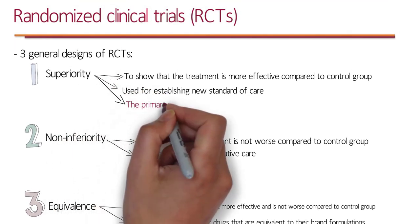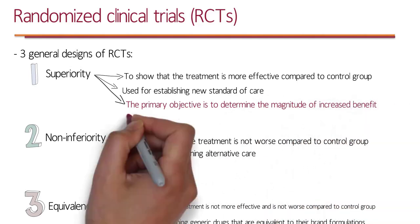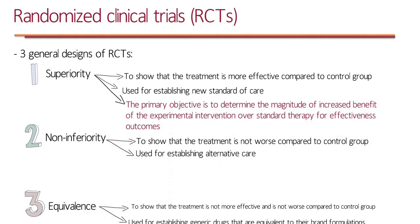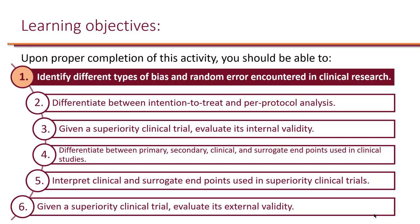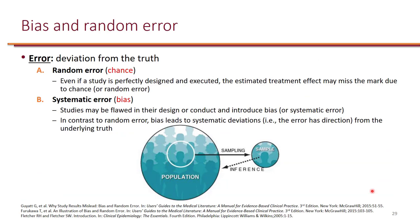For superiority studies, the primary objective is to determine the magnitude of increased benefit of the experimental intervention over standard therapy for effectiveness outcomes. It is almost impossible to have an absolutely perfect clinical trial. There will almost always be some sort of error in the results of clinical trials. An error is basically a deviation from the truth. This deviation could be a random error due to chance, or it could be a systematic error which we refer to as bias.